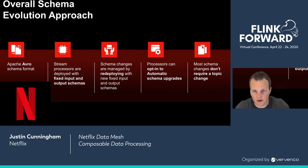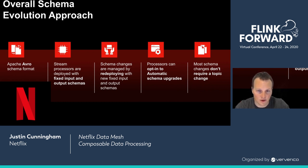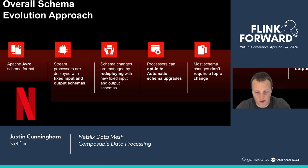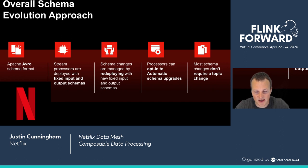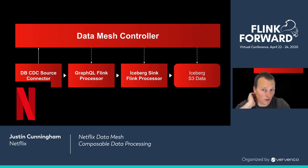Schema changes themselves are managed externally. Whenever there is a schema change, we end up redeploying the jobs with new configuration. Most schema changes in the system are user-initiated. For select jobs, we do enable automatic schema upgrades — in that case, the data mesh controller will automatically redeploy jobs with new fixed schema versions when there are upstream schema changes. For the most part, we intend to keep schema changes on a single topic, even if they're breaking for some processors — with a few exceptions for things like changing a primary key or changing the data type of a field, which is really difficult to deal with in most syncs. It's always possible to generate a schema that can read all of the data in a topic, which usually relies on relaxing constraints on some fields like making them optional.